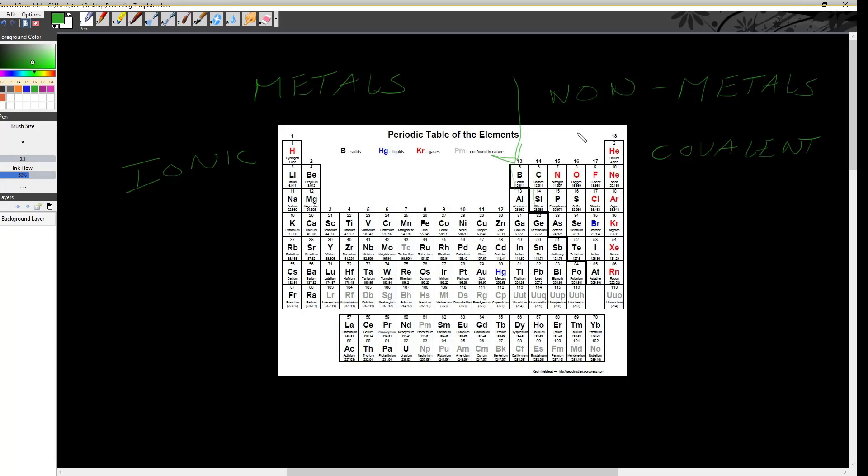So if you have two non-metals combining, such as carbon dioxide, that is a covalent compound. An ionic compound, let's say we've got sodium and chlorine, NaCl, sodium chloride, that is a metal and a non-metal. So make sure you recognize that when you start looking at the periodic table.